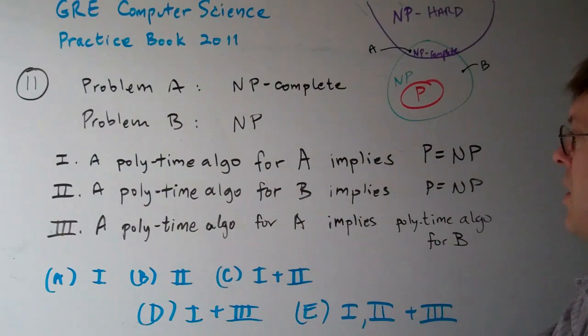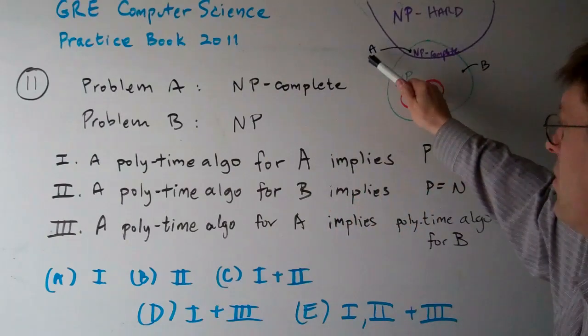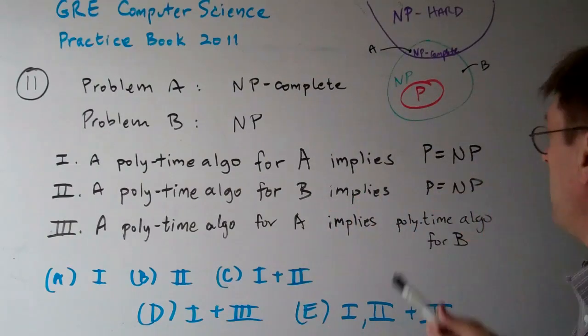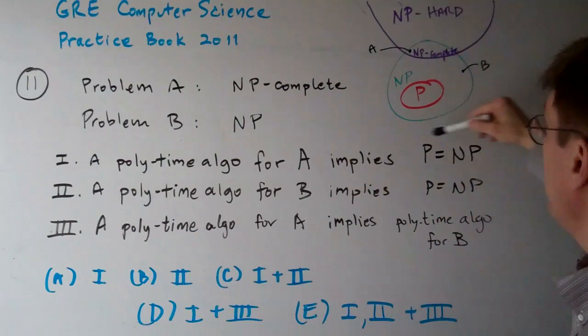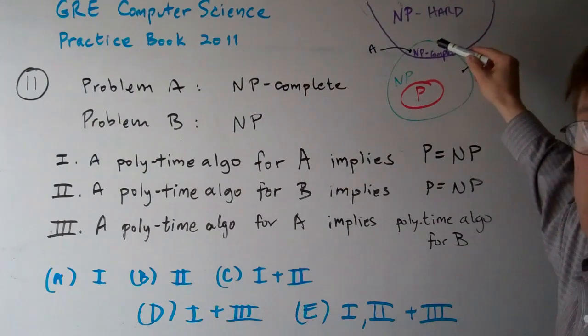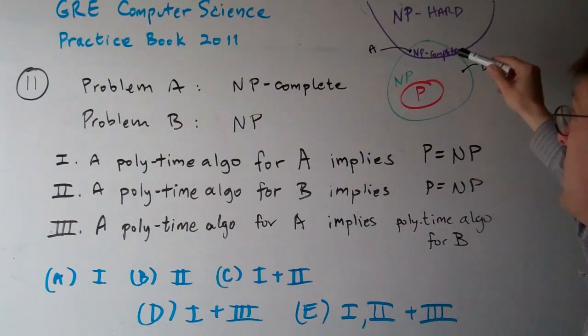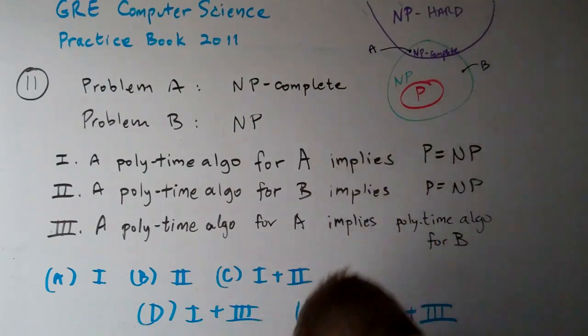Now, a polynomial time algorithm for A implies P and NP are the same. In other words, all these NP are the same. So, because the hardest problems in NP, the NP-complete ones, are there, one is definitely true. Let's mark that out.